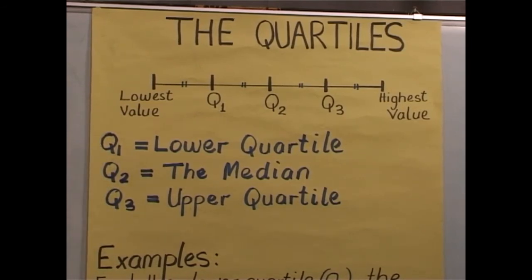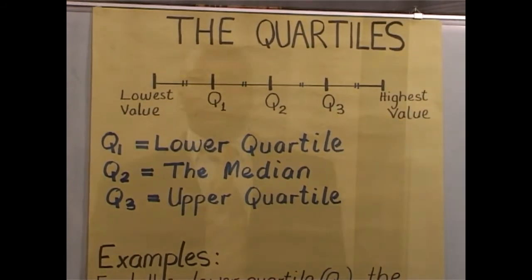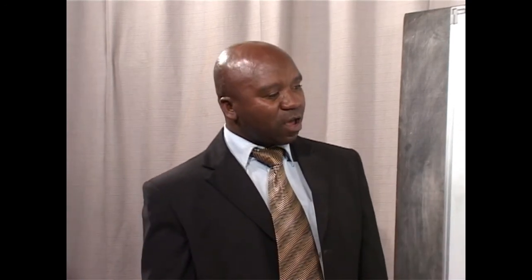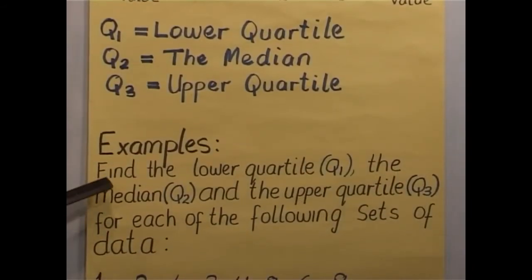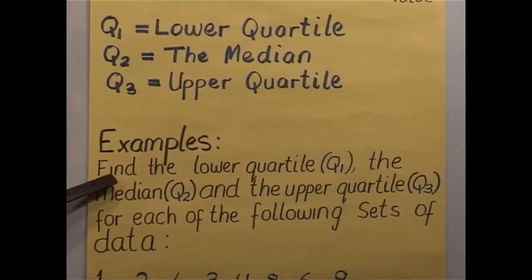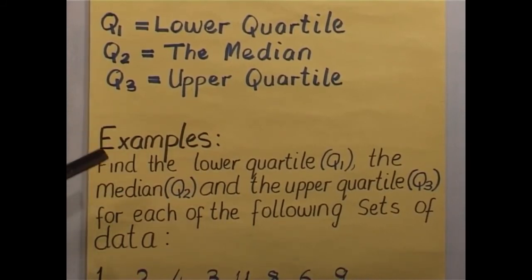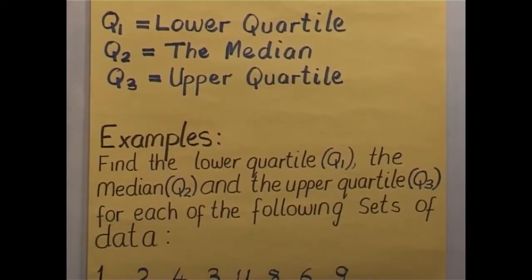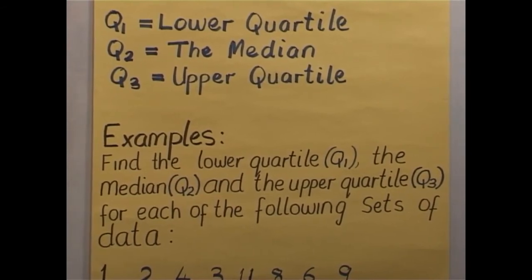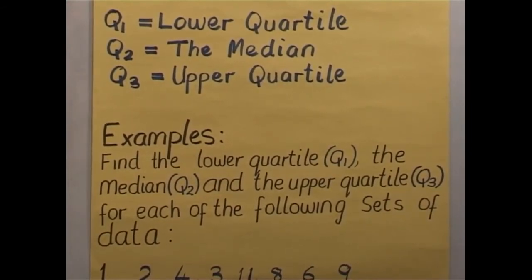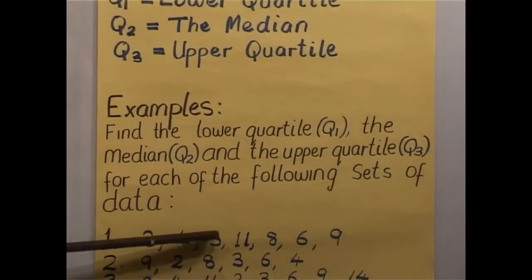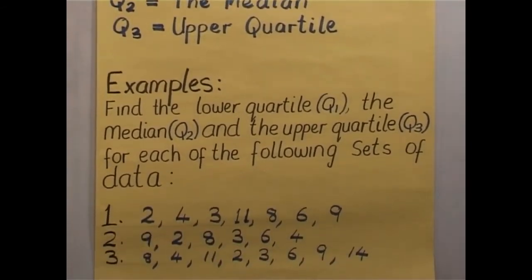Let us now see how we find Q1, Q2, and Q3 when given a set of values. The question says: find the lower quartile Q1, the median Q2, and the upper quartile Q3 for each of the following sets of data. The first set: 2, 4, 3, 11, 8, 9, 6, and 9.